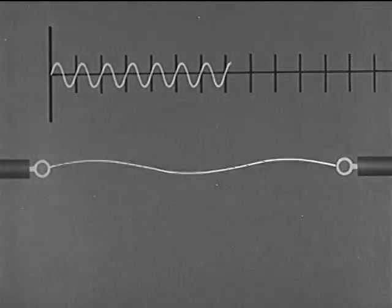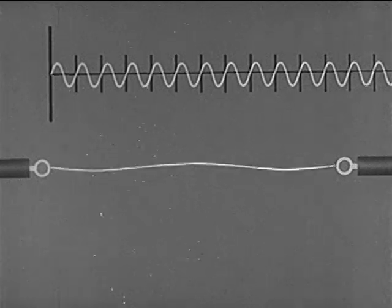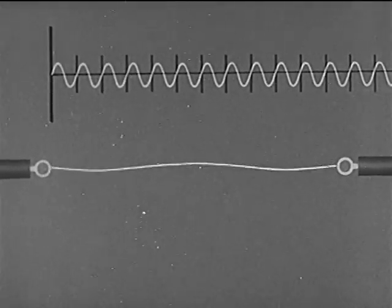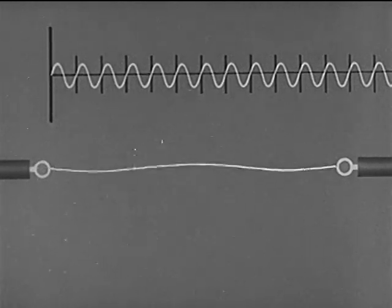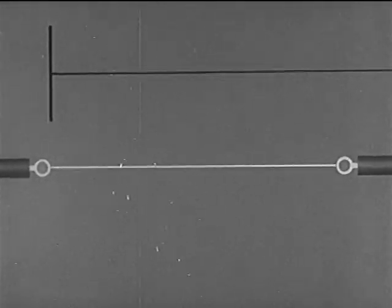When the string vibrates in three segments, it produces its second overtone, the third partial. Here, the frequency is three times that of the fundamental.